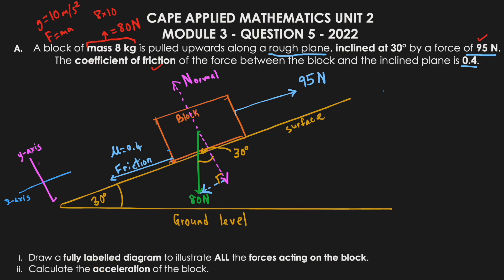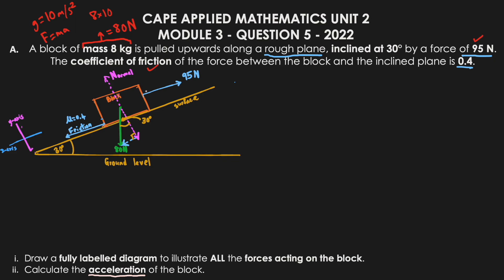Now we calculate the acceleration of the block. Acceleration occurs along the direction of the resultant (net) force. We have forces in the x-direction and y-direction. Since all movement is along the incline surface — the x-direction — we apply Newton's second law: the sum of forces in the x-direction equals mass times acceleration (ΣFx = ma).